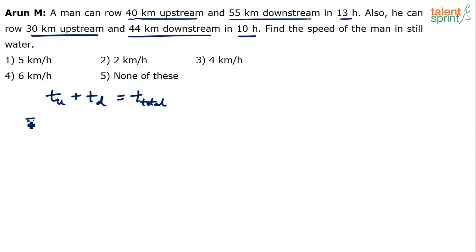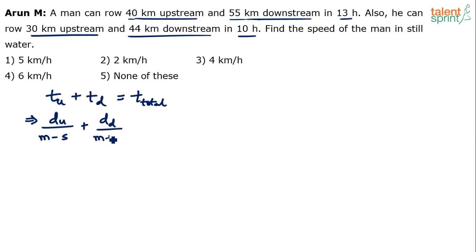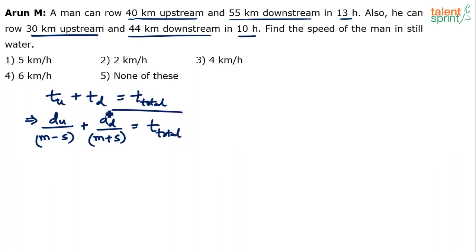So this would be: distance upstream divided by speed upstream, where speed upstream equals speed of the man (m) minus speed of the stream (s), plus distance downstream divided by speed downstream, where speed downstream is m plus s, equals total time T. Downstream speed is the sum of speeds; upstream speed is the difference of speeds.